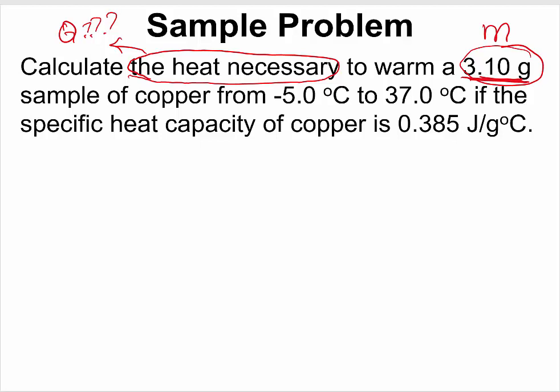From a temperature of negative 5.0 degrees Celsius to 37.0 degrees Celsius. If the specific heat capacity is given as 0.385 joules per gram per degree Celsius.